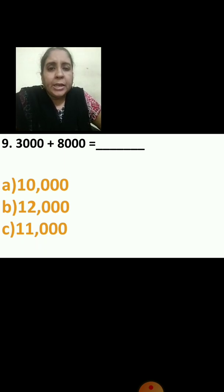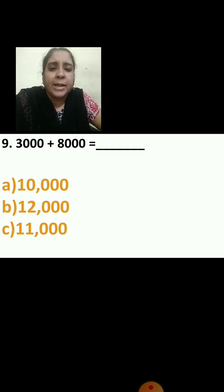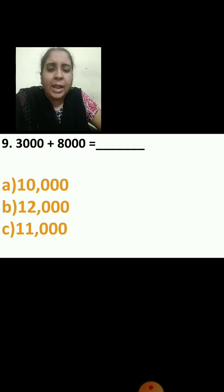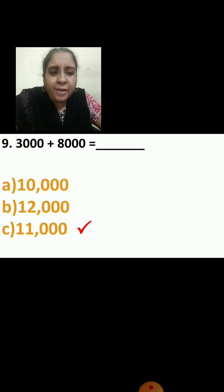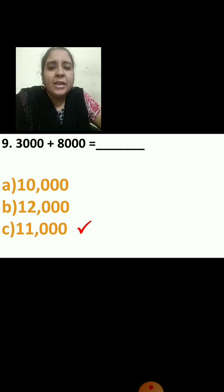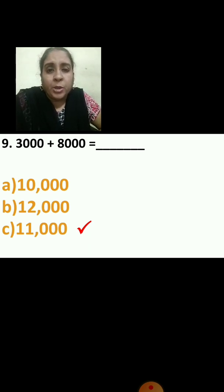Now we will see the 9th question: 3,000 plus 8,000 equals dash. Write 3,000 above and 8,000 below and add both numbers. Your answer is 11,000. You should be very careful when adding in exams also. Be careful when you are doing the working. Add, check your answer, and then tick the correct option. Don't be in a hurry.